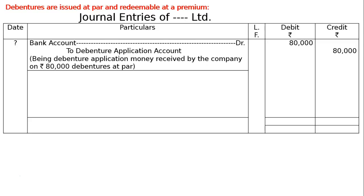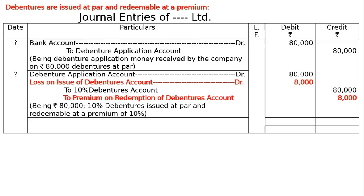The next entry is your due entry: debenture application account debited Rs. 80,000. There is premium on redemption of debentures at 10%, hence loss on issue of debentures account debited 10% of Rs. 80,000, that is Rs. 8,000, to 10% debentures account, that is Rs. 80,000 in the credit. And premium on redemption is 10% of Rs. 80,000, hence to premium on redemption of debentures account credit Rs. 8,000.